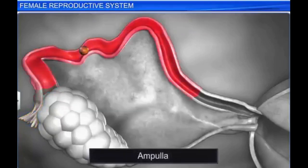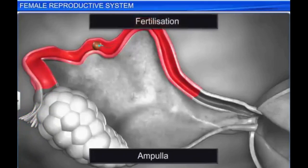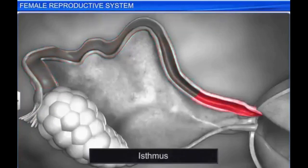The ampulla is the swollen and curved part behind the infundibulum. The fertilization of the ovum takes place in this part. The isthmus is a narrow and straight cavity, and it joins the uterus.